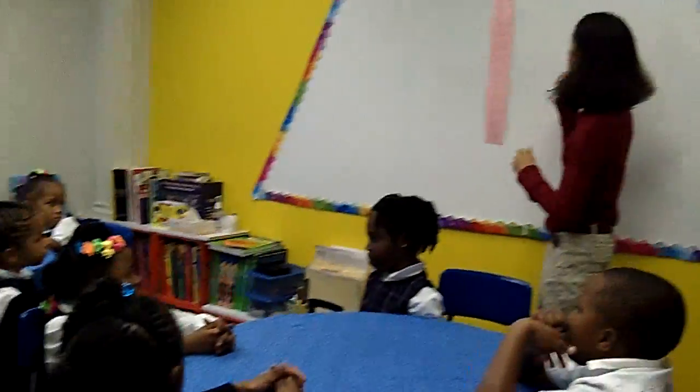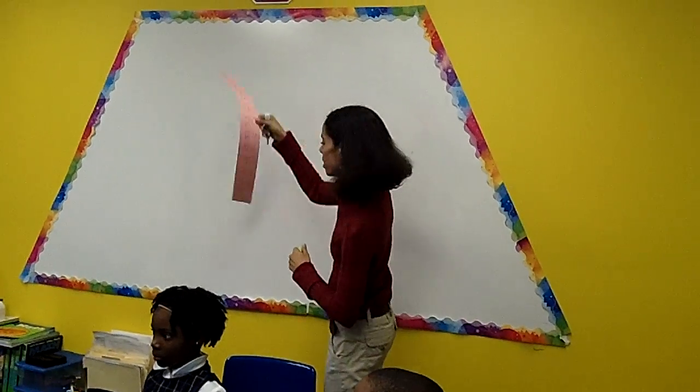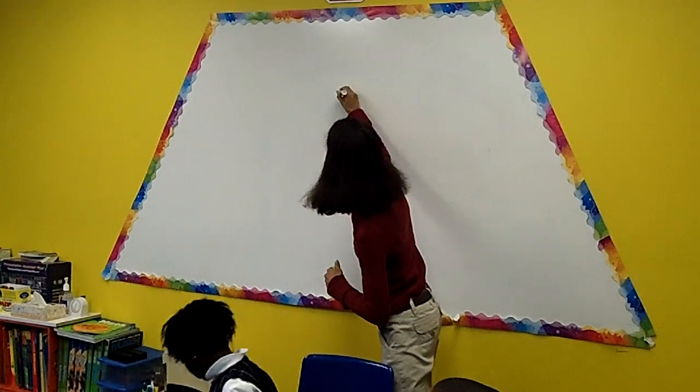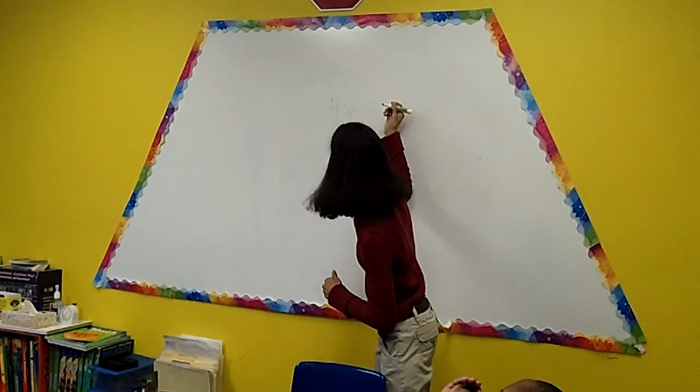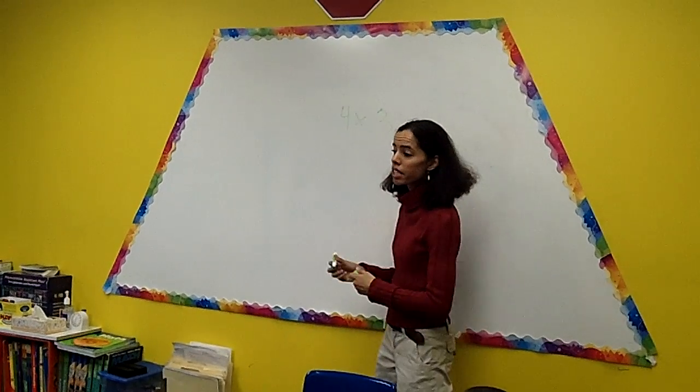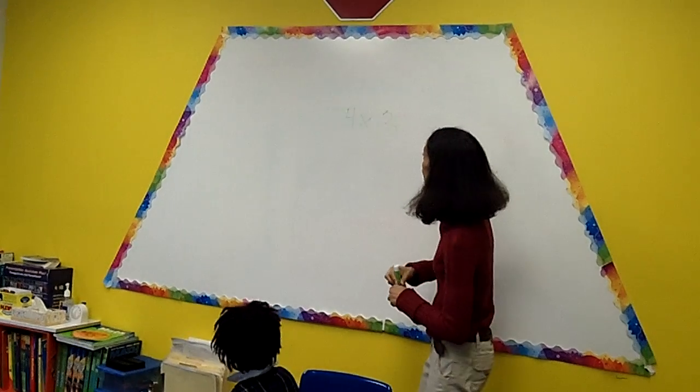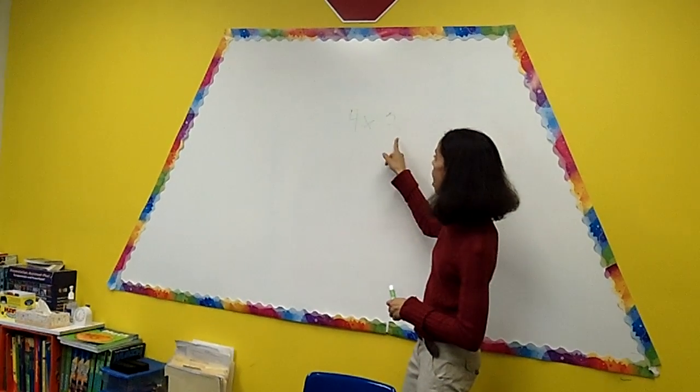I would first like to see, and we don't even need this because my leaders know their numbers. Let's see, four times three. Now one way that I can teach you, we already know the song, we're going to count by fours how many times class?